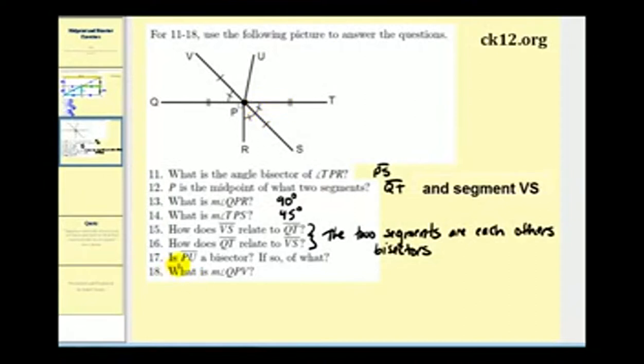Number 17, is segment PU a bisector? If so, of what? So here's segment PU, and notice how it does intersect segment QT and segment VS at the midpoint. So it is a bisector of those two segments.